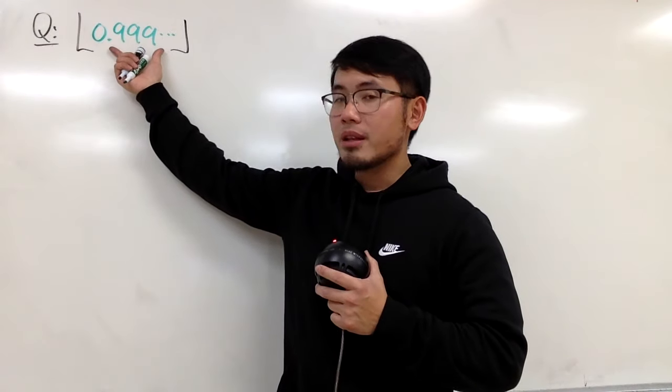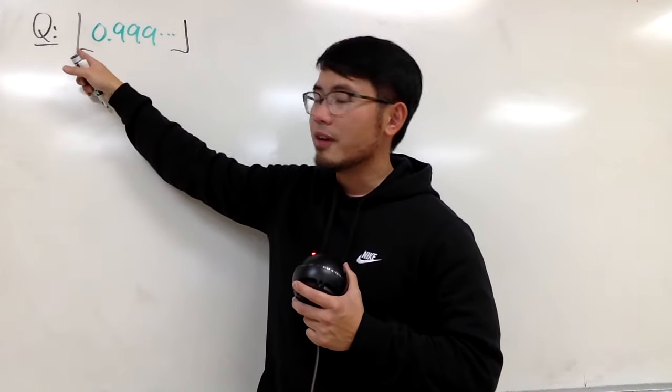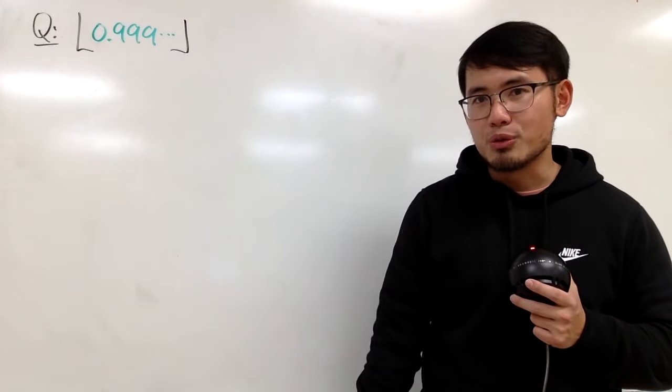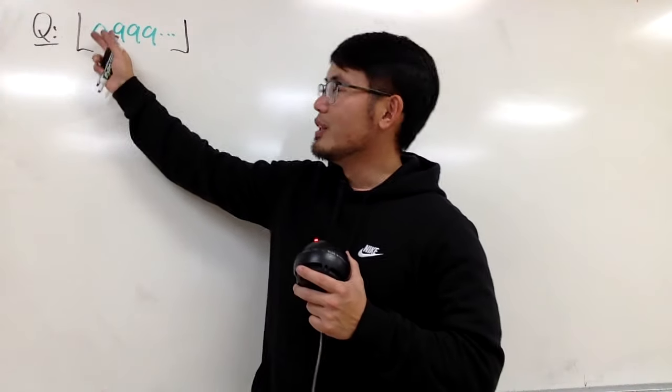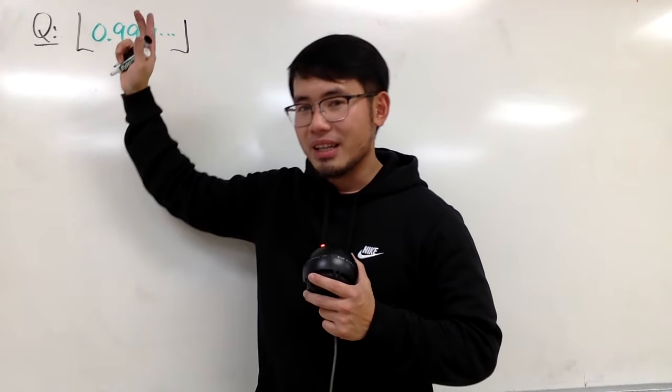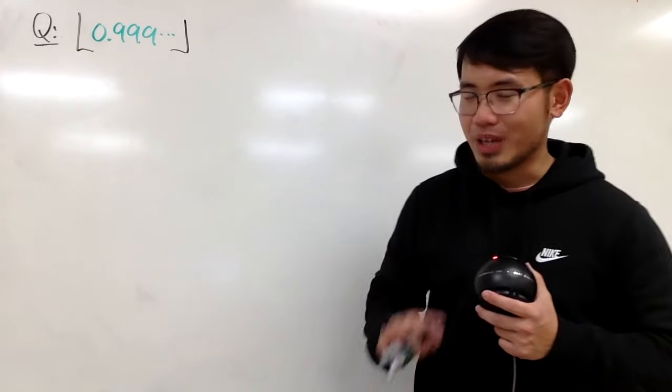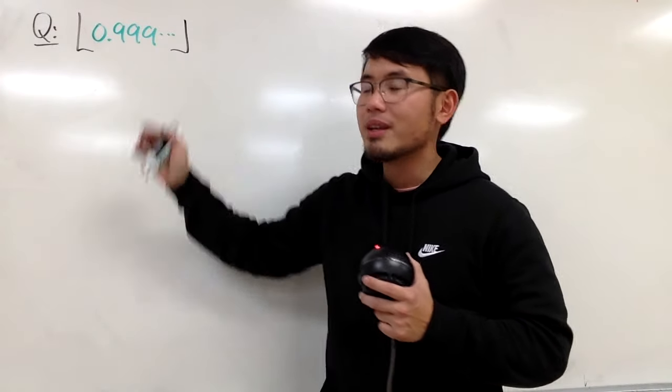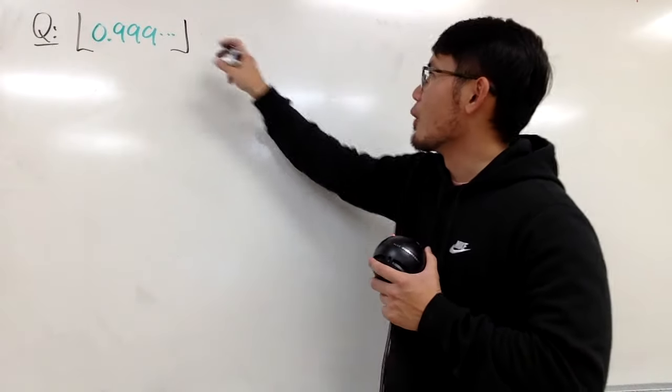And be careful, this right here represents a limit inside of a floor function, and floor function is a discontinuous function at integer values. So we cannot just change the order of limit and the function whenever we want. We have to do it carefully. And because the way that this is written, we have to do this inside out. So let's get going.